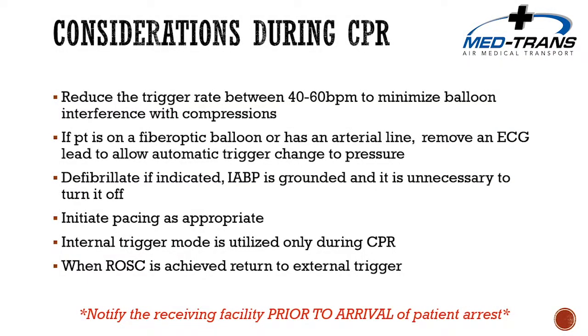During CPR with chest compressions, reduce the trigger rate to between 40 and 60 beats per minute to avoid interference with compressions. If the patient is on a fiber optic or arterial line trigger, removing an EKG lead allows the trigger to automatically switch to arterial pressure. Defibrillation can proceed as indicated — the balloon pump is grounded and does not need to be turned off. External cardiac pacing can also be initiated as appropriate. Once spontaneous pulse returns, switch the trigger back to EKG.